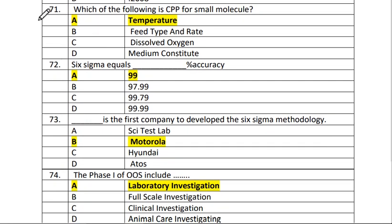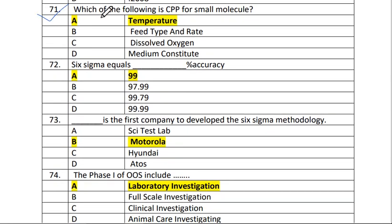Next is question number 71. Which of the following is a CPP for small molecules? The answer is A, temperature.